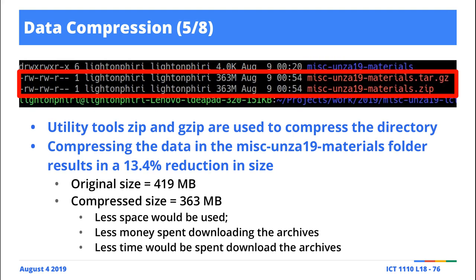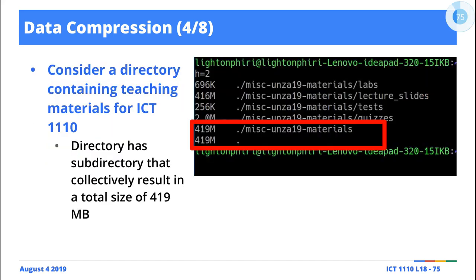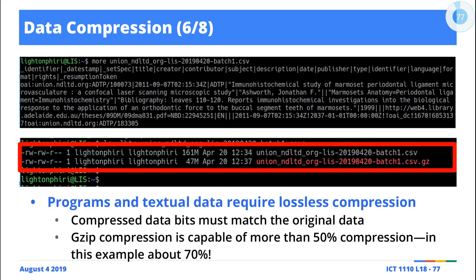You have a lot more advantages when you compress data than when you store it in its original form. You're saving space and spending less time transmitting the data, whether it's over the network or to a flash drive. Moving 363 megabytes to a flash is going to take less time than moving 419 megabytes. These performance gains make more sense when you're dealing with massive amounts of data, like the 16 million file example. Working with data in original format just wouldn't make sense.